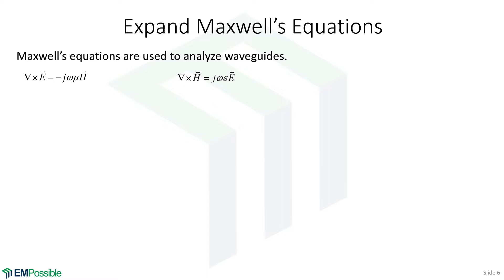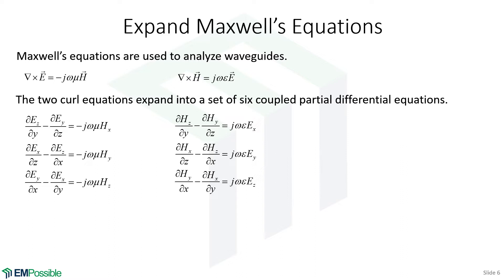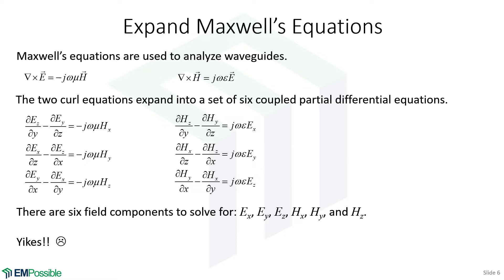We start with the curl equations and expand them. Those are two vector equations that expand into a set of six coupled partial differential equations. The real problem is we have six things to solve for: the X, Y, and Z components of the electric field, and the X, Y, and Z components of the magnetic field. We have a lot of work ahead of us — but this is where the simplifications come in, and we would like to reduce this number of terms.